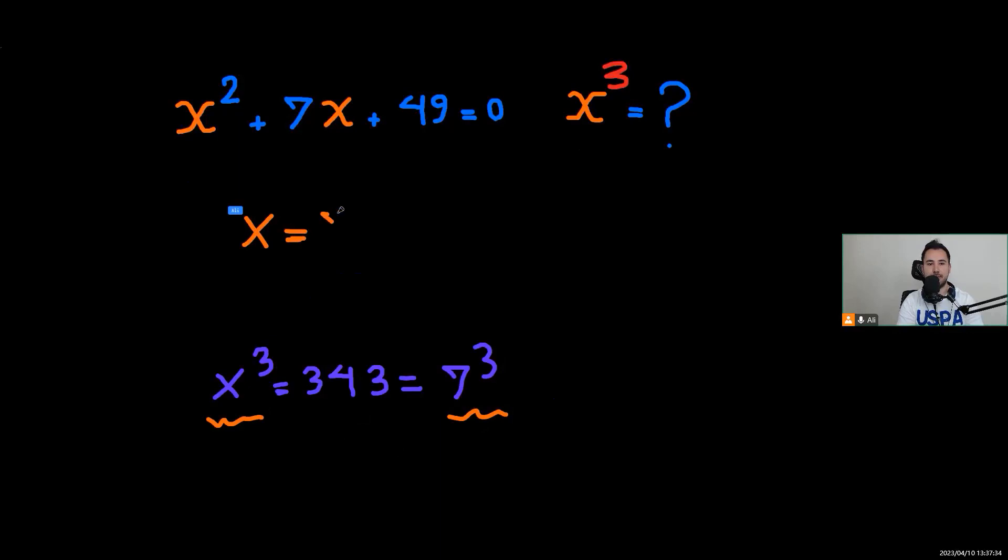Now let's check if 7 is a solution of the main equation. I'm going to write 7 squared plus 7 times 7 plus 49 equals zero. Well, it doesn't work.